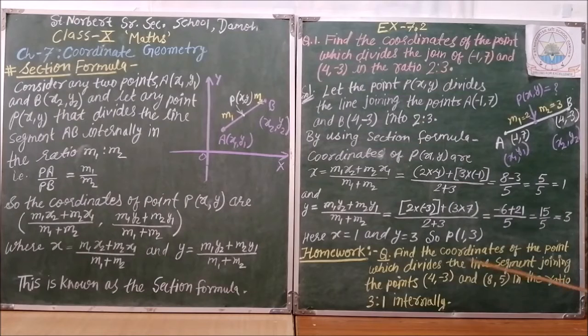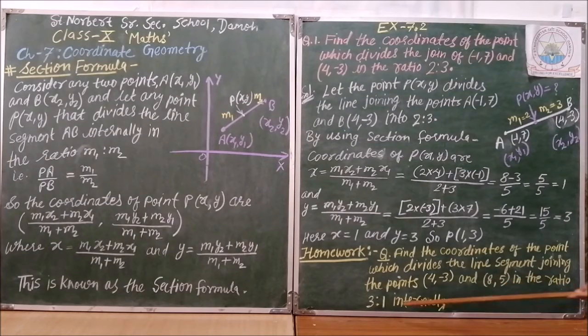Now, write some homework. Question number first, find the coordinates of the point which divides the line segment joining the points 4 comma minus 3 and 8 comma 5 in the ratio 3 ratio 1 internally. Thank you.